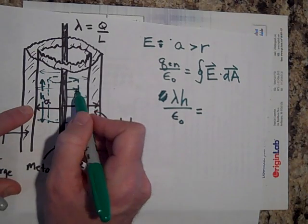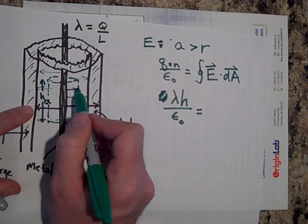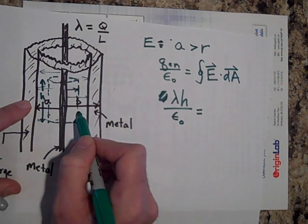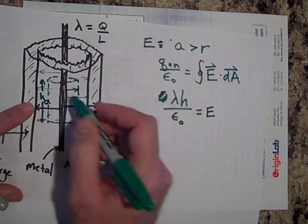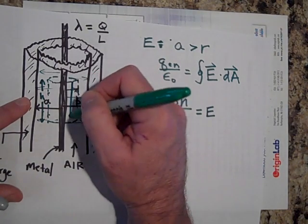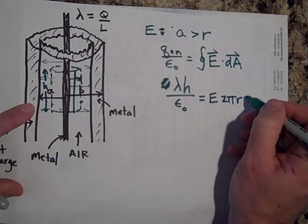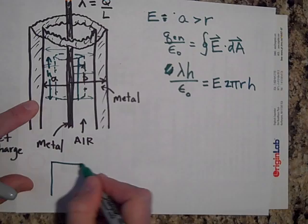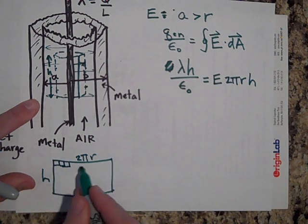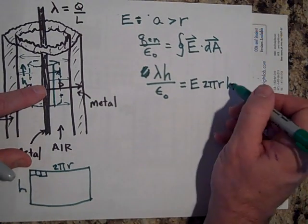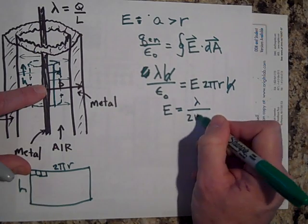We can get rid of the dot product because E and dA are always in the same direction, and I can pull E out of the integral because it's the same at every location. Summing up all the dA's gives the area of the side, which is 2 pi r times h. So we can cancel h, and the electric field inside — for r less than a — is lambda over 2 pi r epsilon naught.